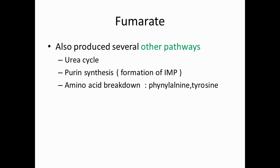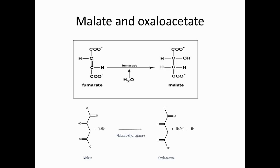You have to remember that fumarate is also produced from several other pathways, like the urea cycle, purine synthesis (especially formation of IMP), and amino acid breakdown of phenylalanine and tyrosine. The last steps of the TCA cycle are malate and oxaloacetate: fumarate converts into malate with the help of fumarase and H2O, and malate converts into oxaloacetate with malate dehydrogenase, producing one NADH molecule.